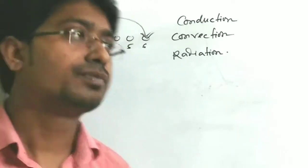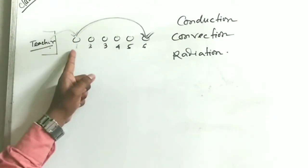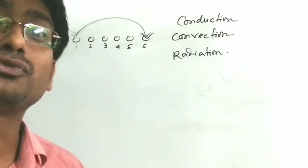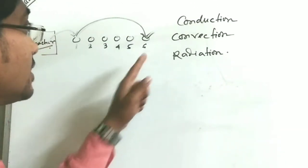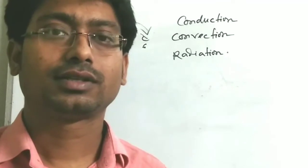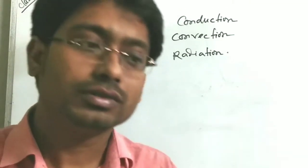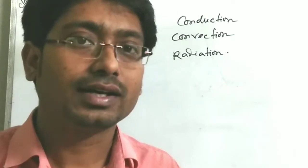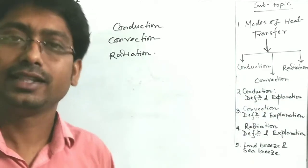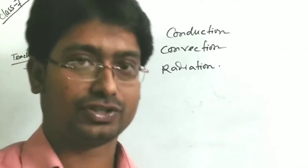The third way to transfer the book: the first student, after receiving the book from the teacher, without changing position or moving, directly throws the book to the sixth student, who receives it. No intermediate students are involved. This is like radiation — no medium is required. Conduction is a slow process, convection is faster, and radiation is the fastest process of heat transfer.